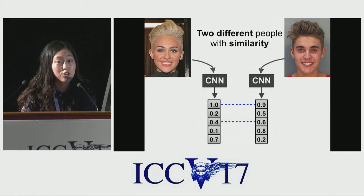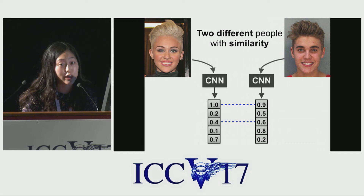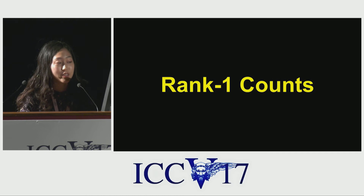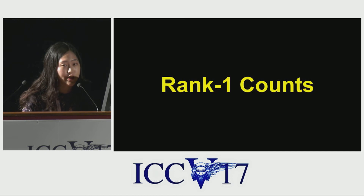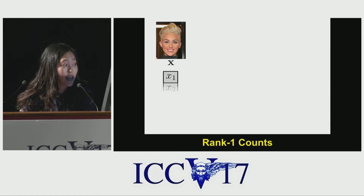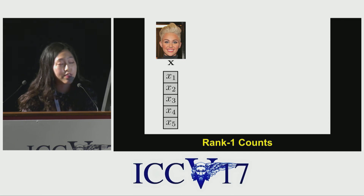But how about two similar-looking people? Due to the similarity, we may find some feature dimensions that are similar to each other. In this work, we have introduced a new similarity measure which we call Rank 1 Counts. Let's say the feature vector of the first image is X and that of the second image is Y1.